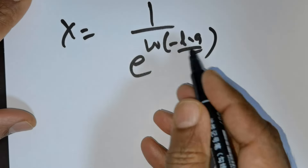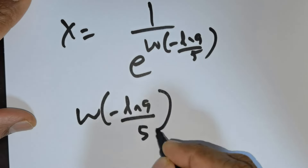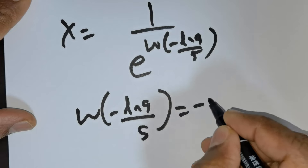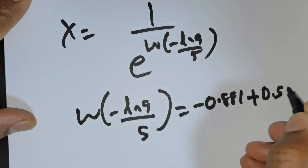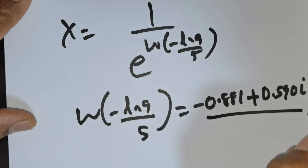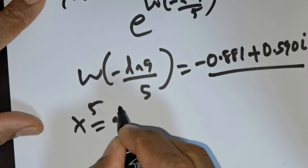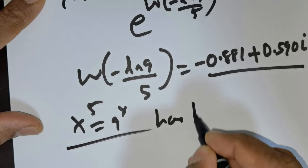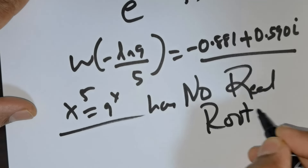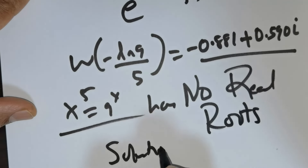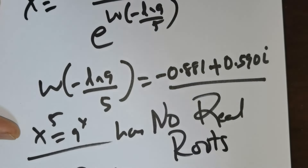Now the most important thing is: what is this? If you were to calculate this, it is going to be approximately negative 0.881 plus 0.5901 times i. Meaning the given question x to the power of 5 is equal to 9 raised to the power of x has no real roots, or you can say no real solution. Please like, share, and subscribe to our channel — until we meet again.